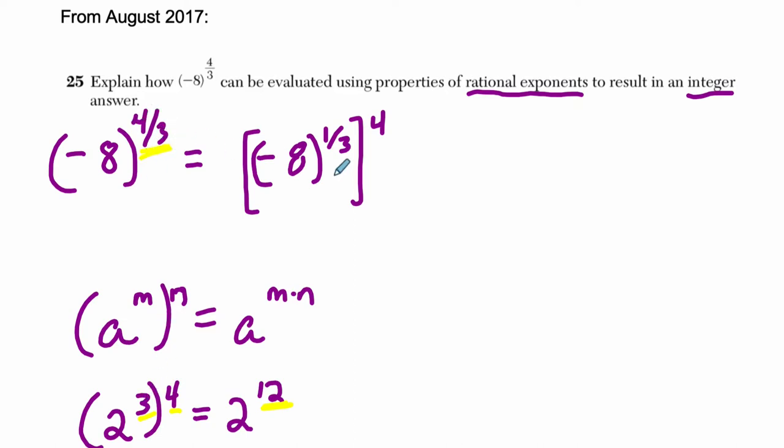4 thirds can be split into 1 third and 4, because 1 third times 4, what does that equal? Well, it's 4 times 1 is 4, and then you can think of this as over 1. 1 times 3 is 3. It's 4 thirds.